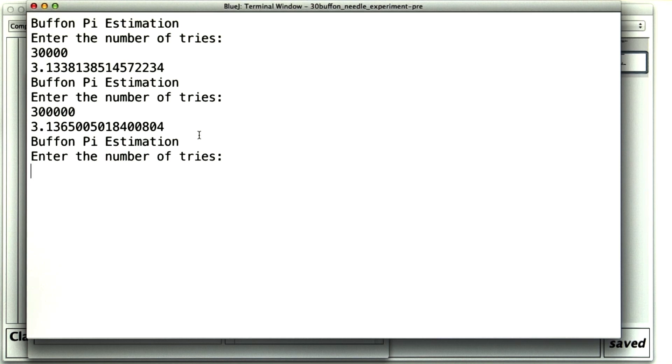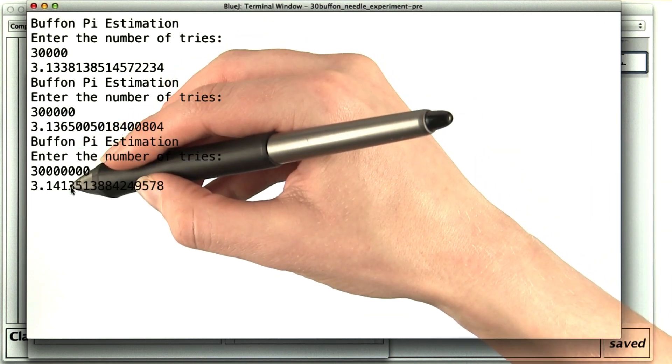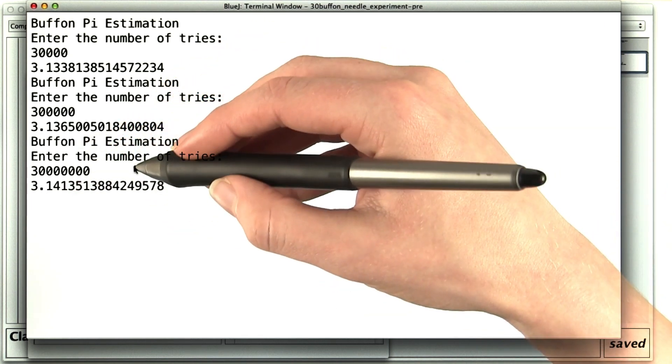How about 3 million? Or 30 million. 30 million? This one might take a second, but not that long. 3.141. We're getting much closer now. But it took 30 million flips.